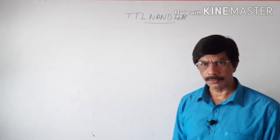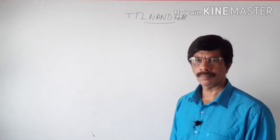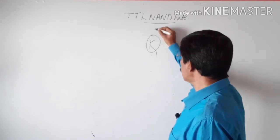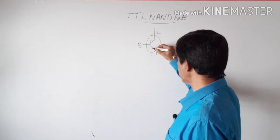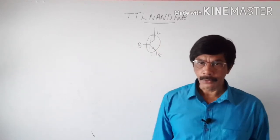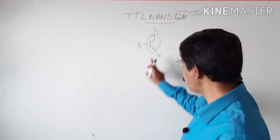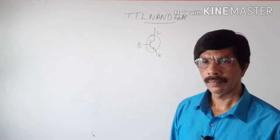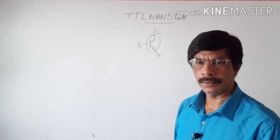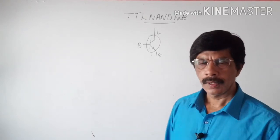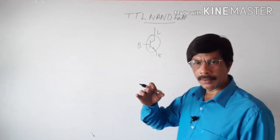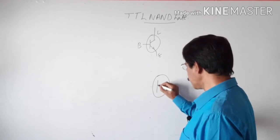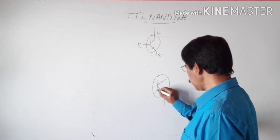We know that the transistor consists of three terminals: base, collector, and emitter. All circuits based on this type of transistor have this base-emitter-collector configuration. But in some digital circuits, the multiple emitter concept is introduced. In such a transistor, instead of one emitter, there are a number of emitters.